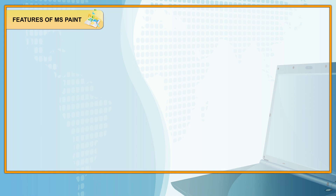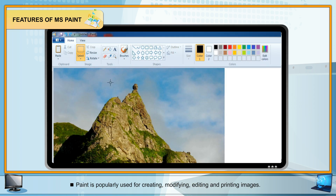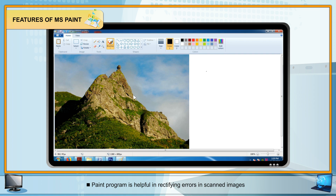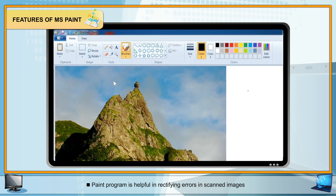Features of MS Paint: It is a simple and easy to use drawing application. Paint is popularly used for creating, modifying, editing and printing images. It is used to practice and improve drawing skills. The Paint program is also helpful in rectifying errors in scanned images.